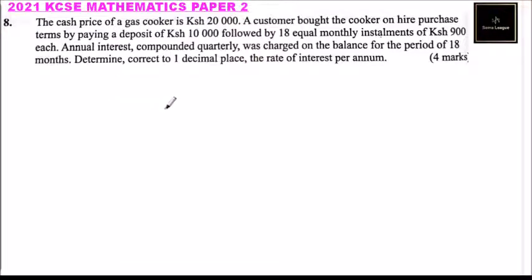Question number eight. The cash price of a gas cooker is Kenya Shilling 20,000. A customer bought the cooker on hire purchase terms by paying a deposit of 10,000 Kenya Shilling, followed by 18 equal monthly installments of Kenya Shilling 900 each.